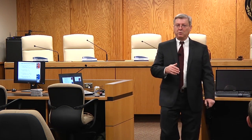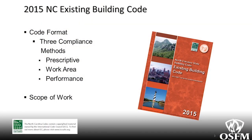The 2015 code came into effect March 1st of 2015. Now we're in the 2018 edition, which went into effect January 1st of this year. There are three compliance methods: a prescriptive method, which is a lot like meeting what the current code would require for a new building; a work area method; and a performance method, where you evaluate the building and can do trade-offs.